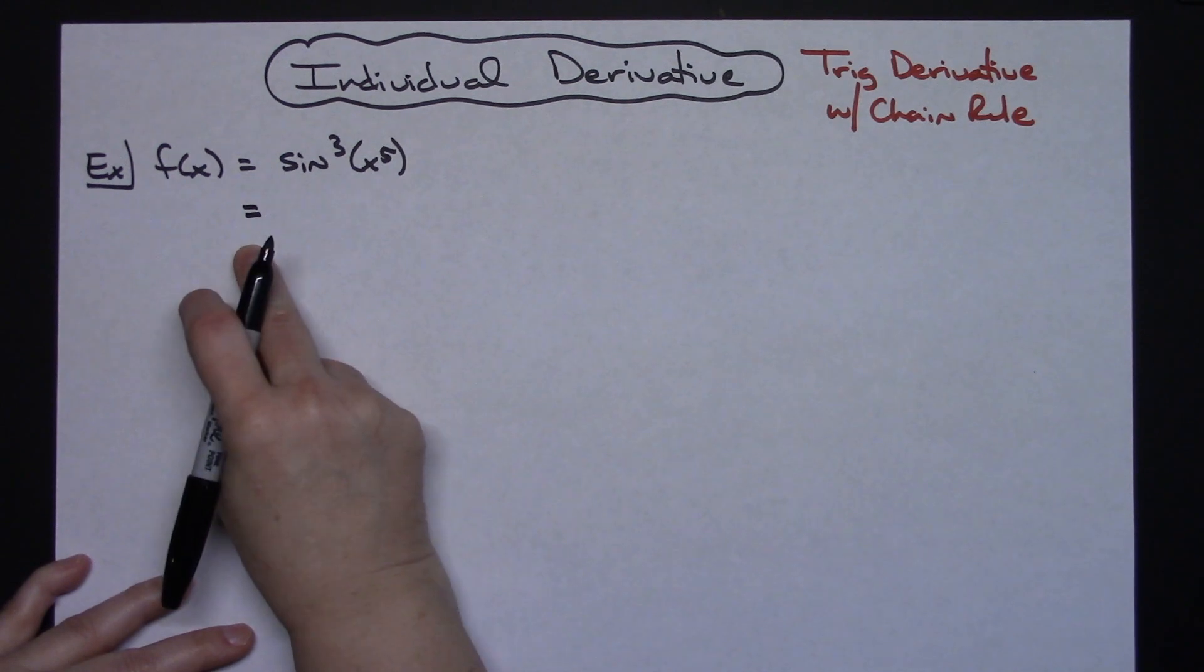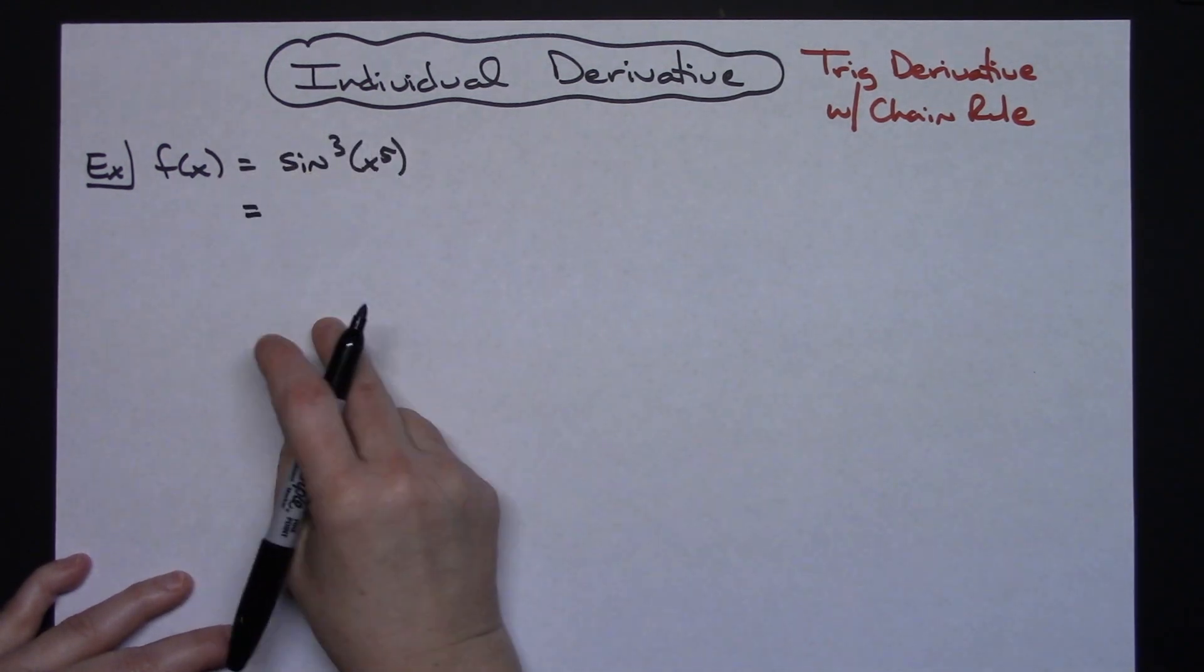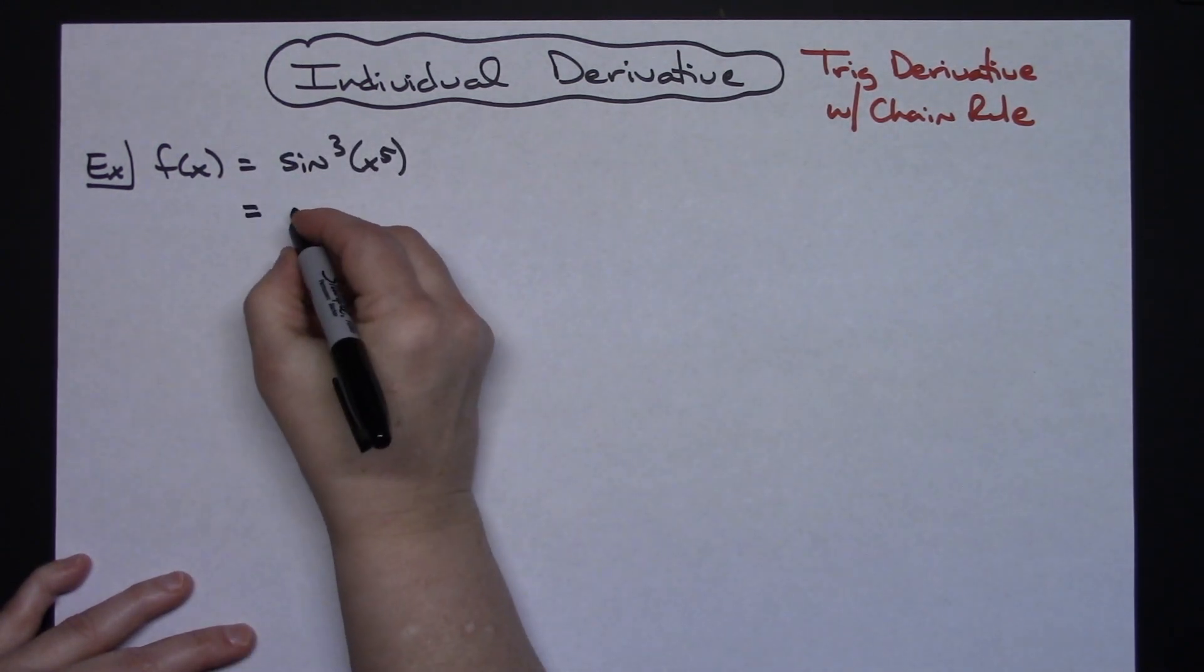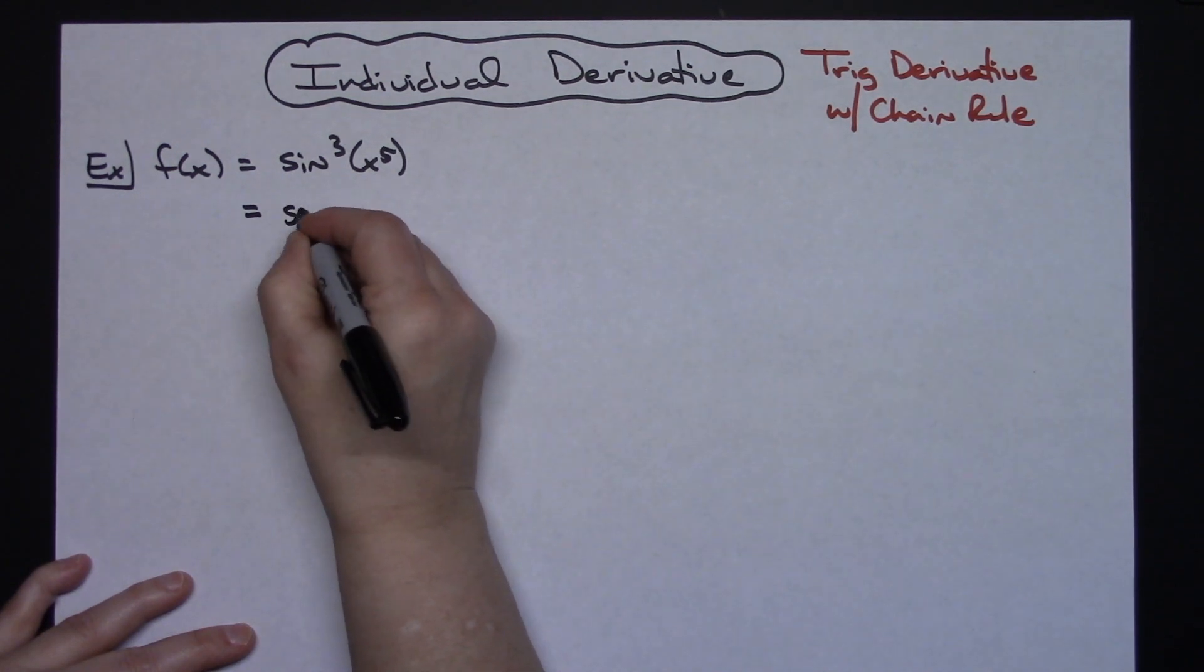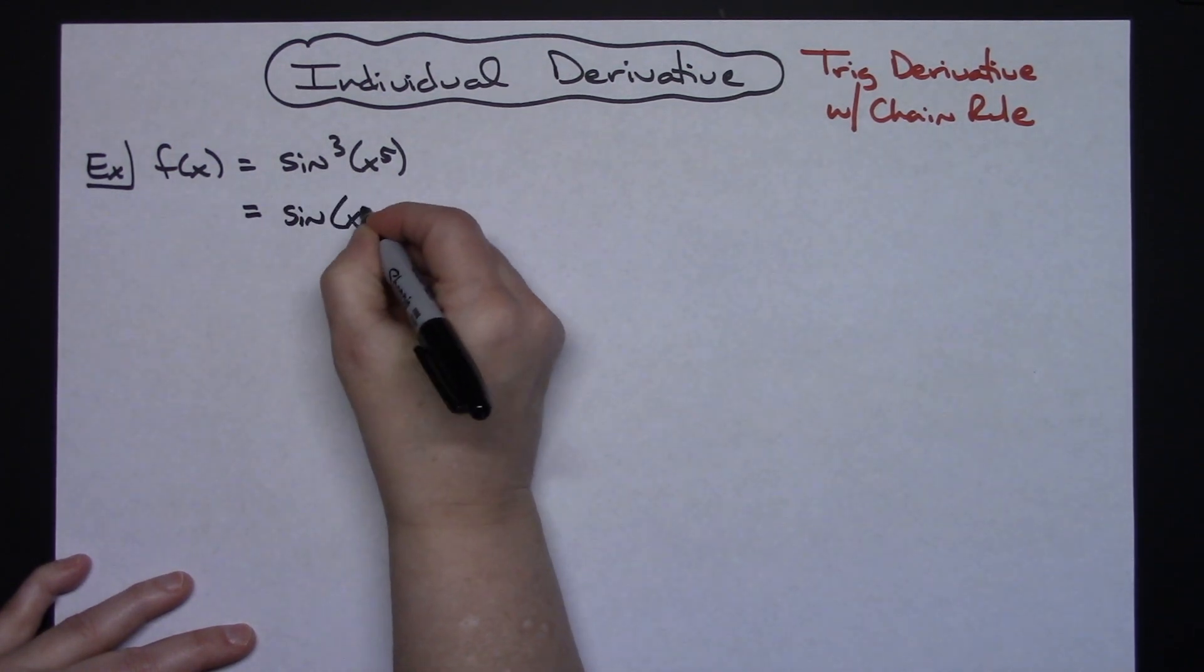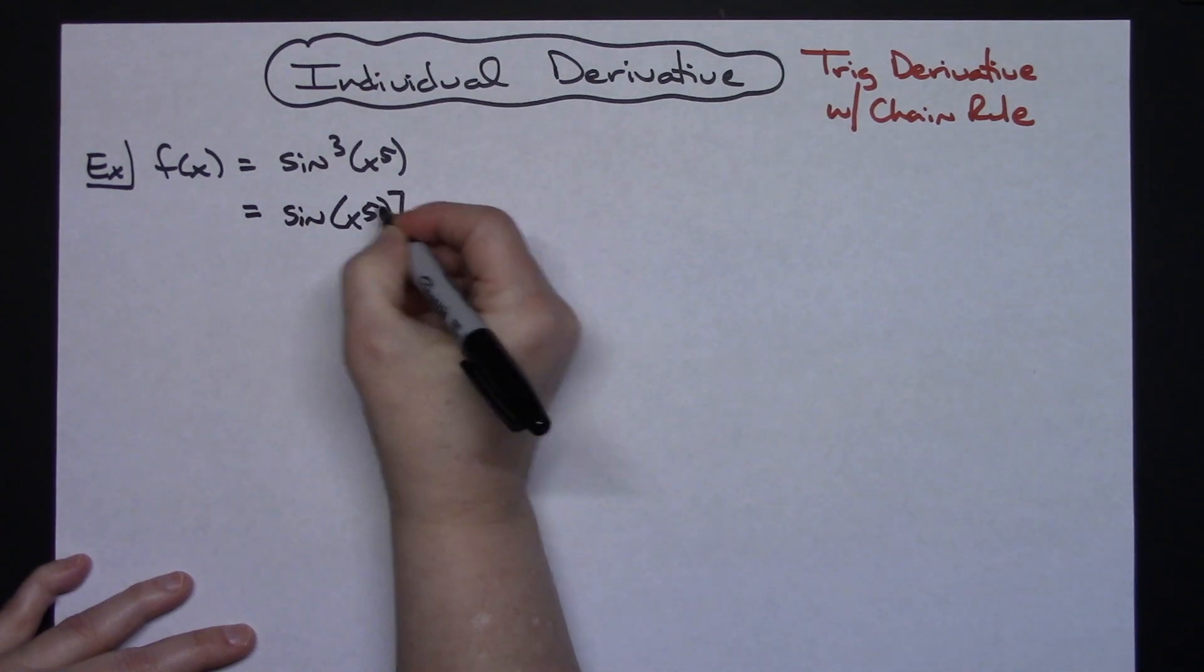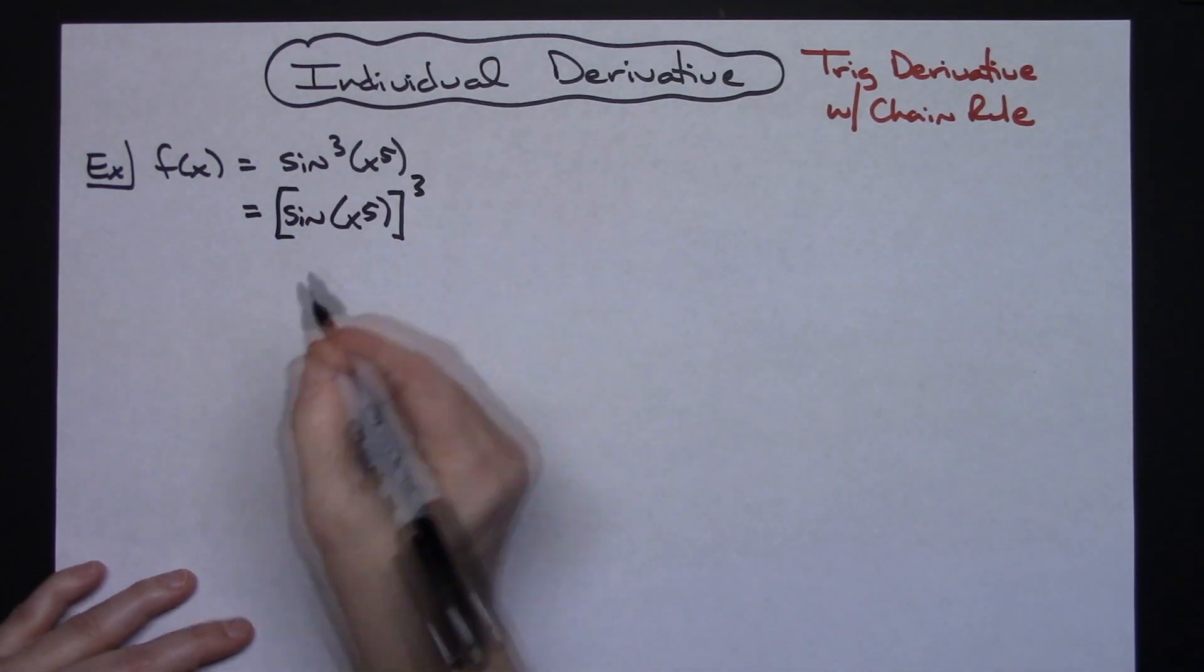So in this first step all I'm going to do is algebraically manipulate this so it's easier for me to see where my inside function is and where my outside function is. So I'm going to have the sine of x to the fifth and then all of that is raised to the third power.